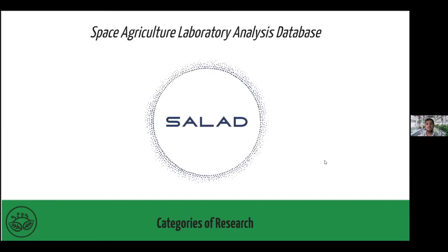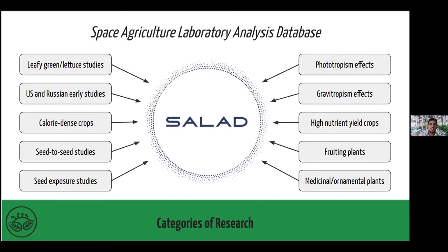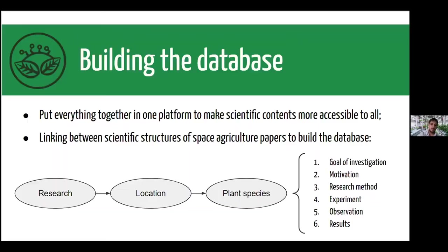About the Space Agriculture Laboratory Analysis Database: we have categories of research that me and my colleagues have been addressing, looking for and reading papers and trying to put all the information together. To highlight: leafy greens and lettuce studies, U.S. and Russian early studies on plant cultivation in space, calorie-dense crops, seed-to-seed studies, seed exposure studies, phototropism, gravitropism, high-nutrient-yield crops, fruit plants, and medicinal and ornamental plants. The goal is to make scientific content more accessible for those interested in future research on plants in space.